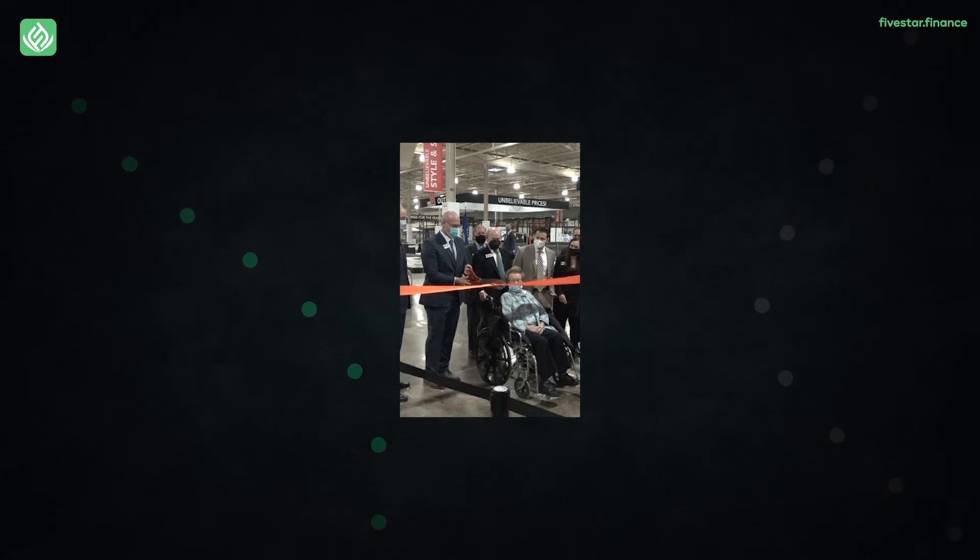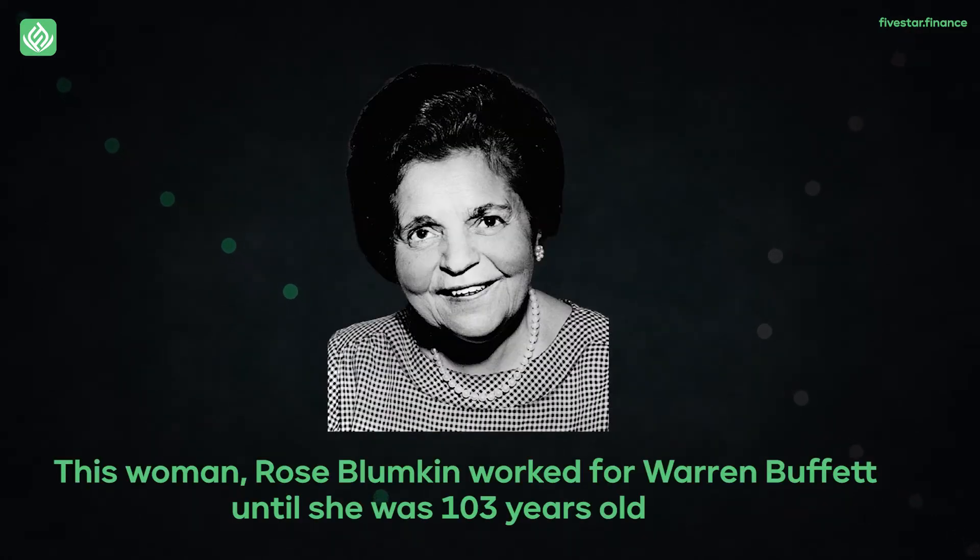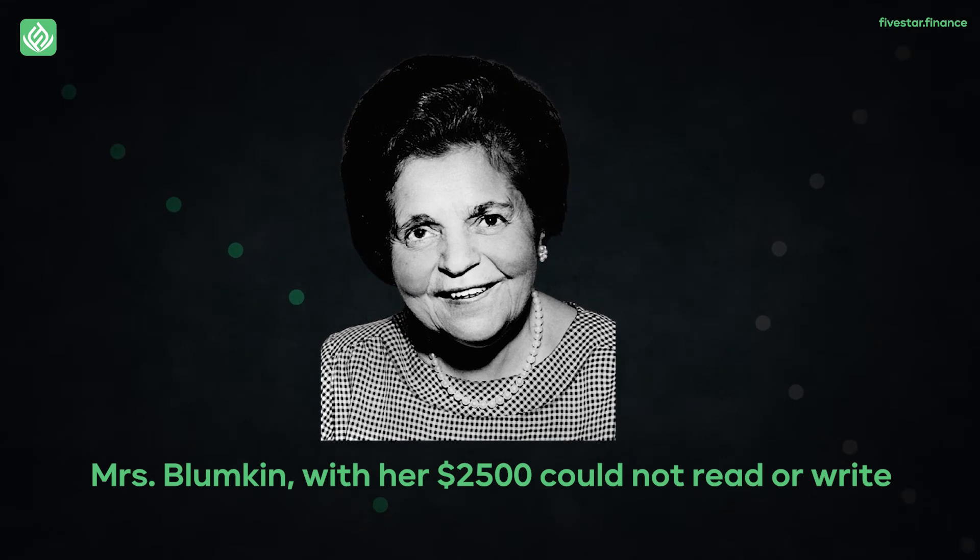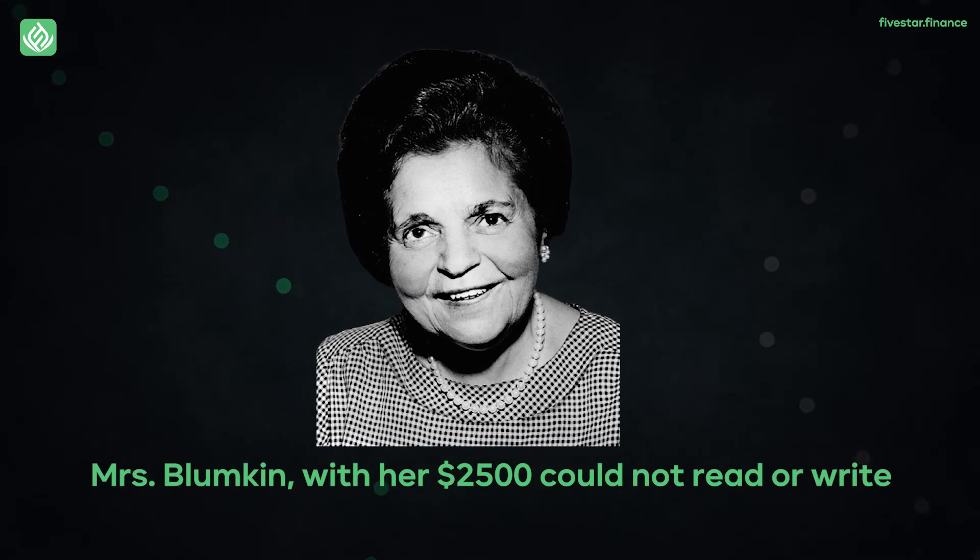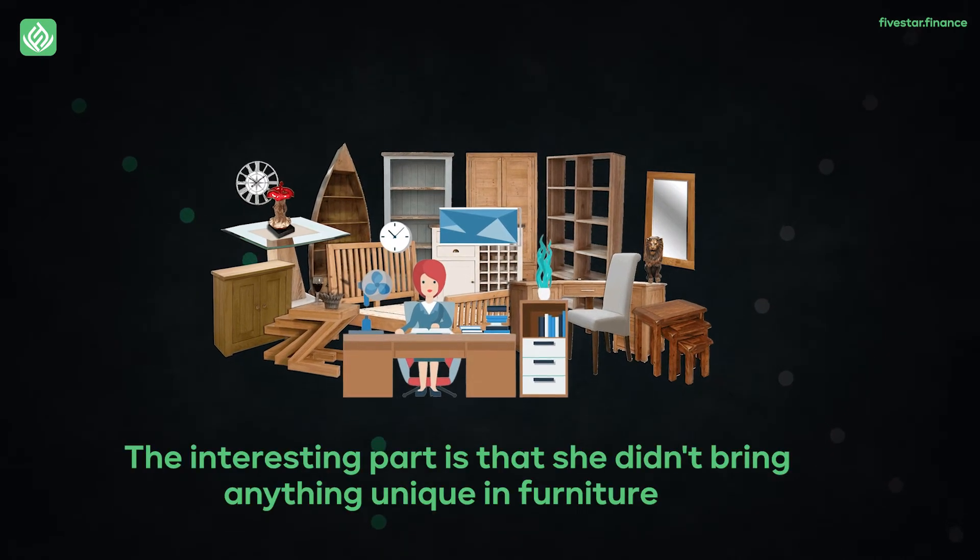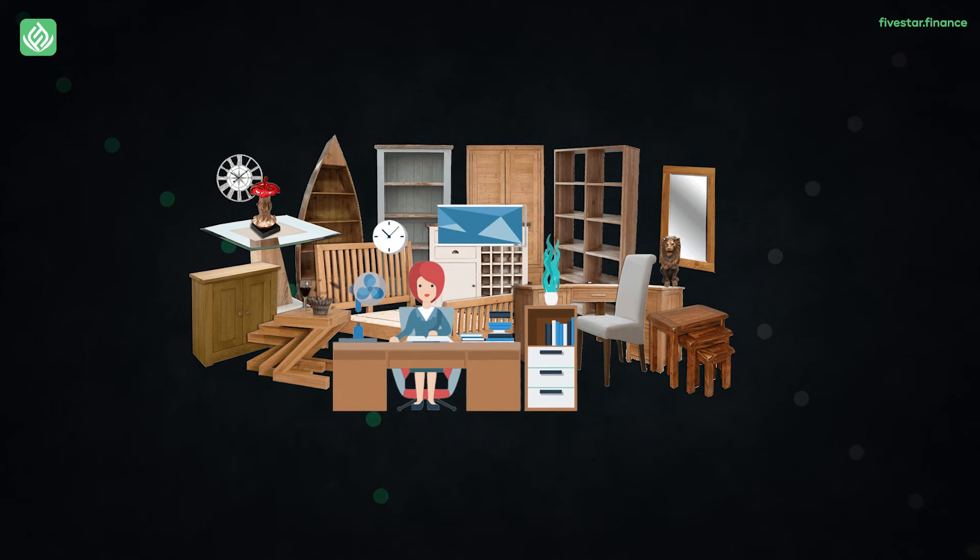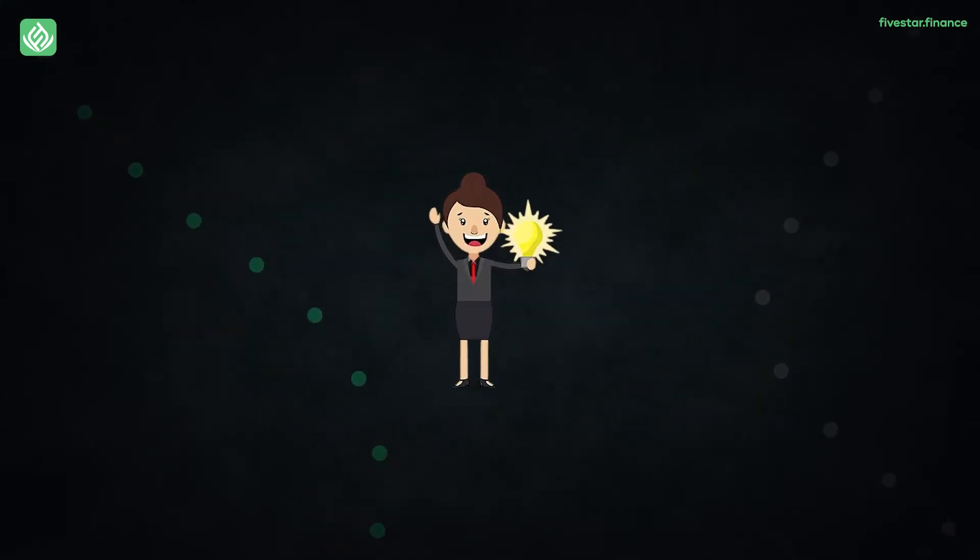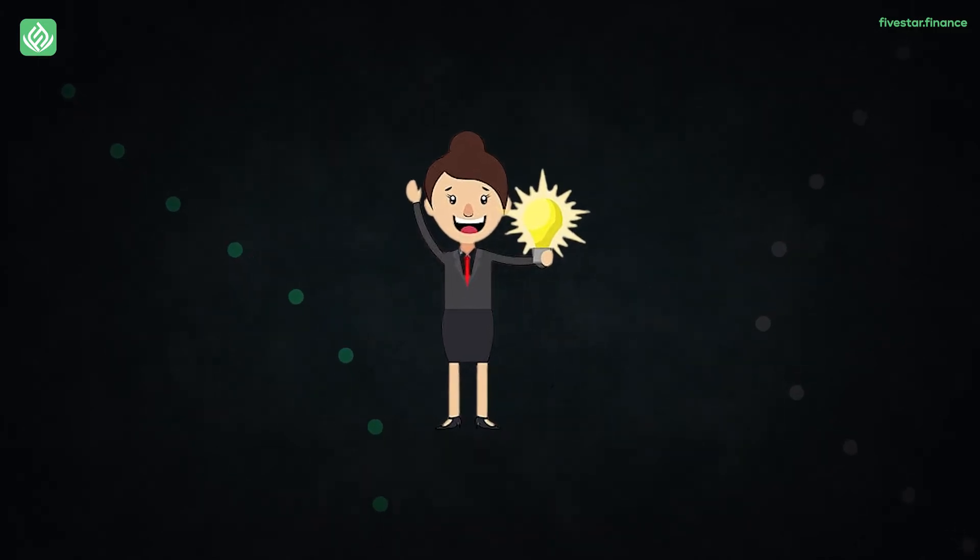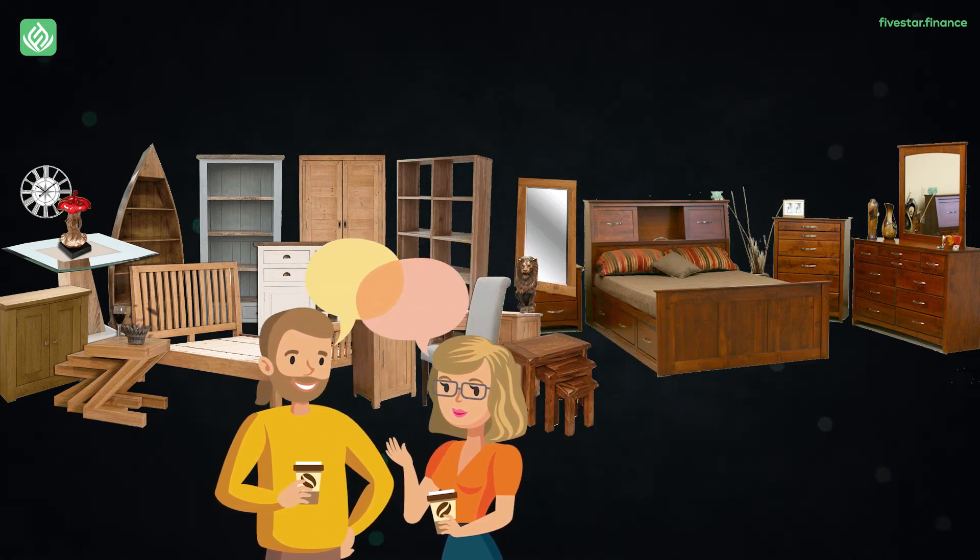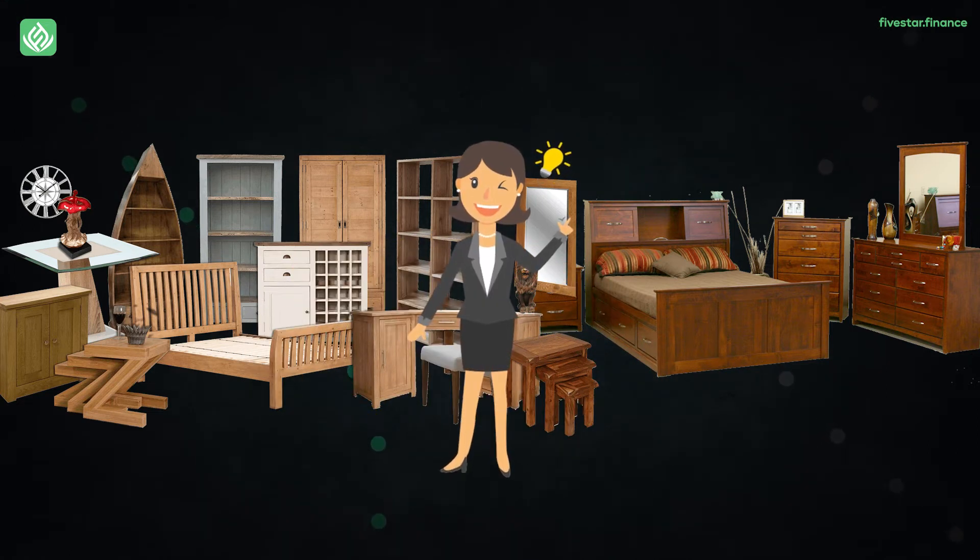Now the fourth generation is working in that business. This woman, Rose Blumpkin, worked for Warren Buffett until she was 103 years old. But one thing is for certain that Mrs. Blumpkin, with her $2,500, could not read or write and she went into the furniture business. The interesting part is that she didn't bring anything unique in furniture, but she brought a determination to succeed. A major part of her belief was that she knew she could outwork anyone else. She knew she cared about her customers. She worked at very low gross margins. But she succeeded in building this incredible business.